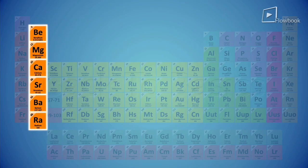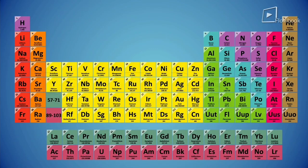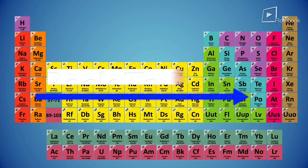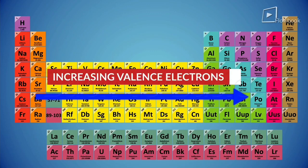Now in periods, the number of valence electrons keeps increasing when we move from left to right. So therefore in periods, the valency of elements at first increases and then decreases.